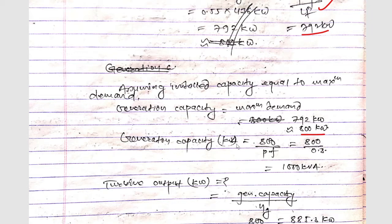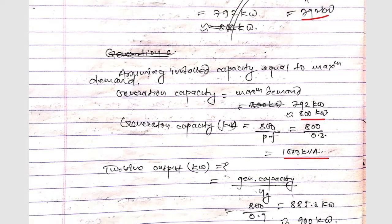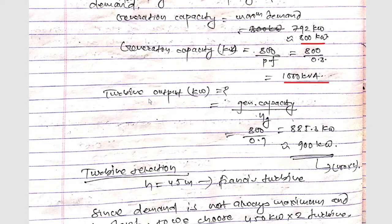So generation capacity means in KVA it will be 800 upon power factor, so 800 upon 0.8 which is 1000 KVA. And now turbine output will be generation capacity upon generator efficiency, so 800 KW upon 0.9 will get here 885.8 means that is equivalent to 900 KW.